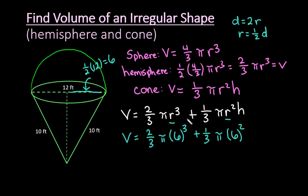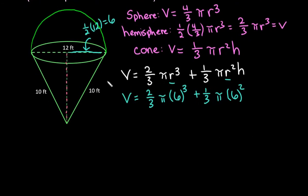We've found the radius, but now we need to find the height of the cone. The height wasn't given directly, but we do have an isosceles triangle. In an isosceles triangle, the height bisects the base, giving us a right triangle where one leg is 6 and the hypotenuse is 10. So we need to find the other leg.